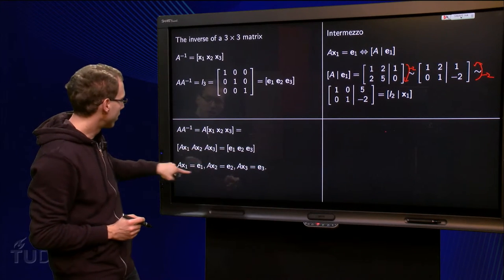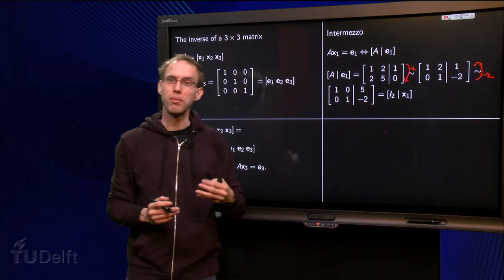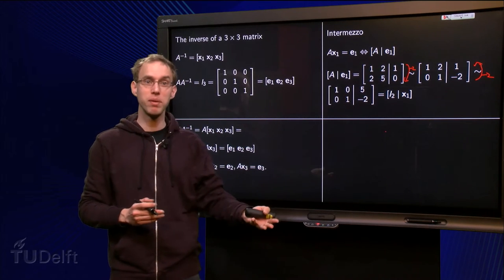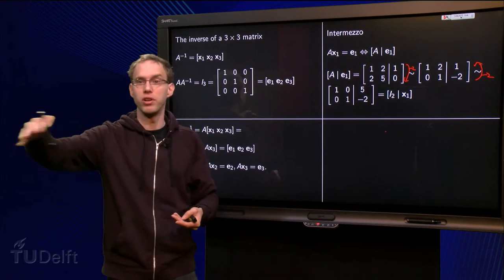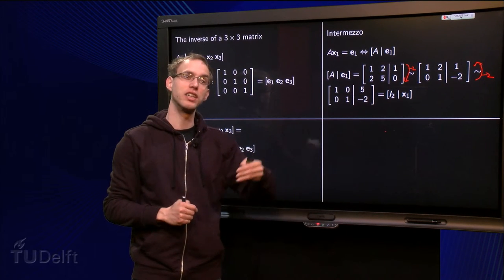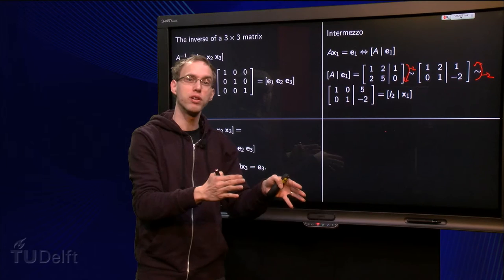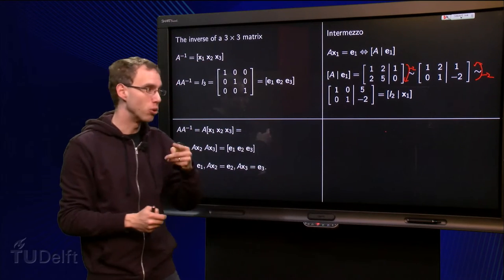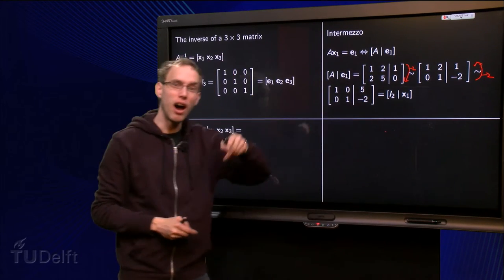So if we are going to solve this type of problem, we form the augmented matrix A with e1, row reductions all the way, until we have the identity matrix first and then bar and then we have our solutions, x1 after the bar.